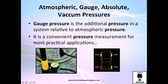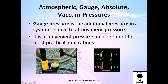Another pressure commonly used is gauge pressure — it is essentially the additional pressure in a system relative to atmospheric pressure. This is convenient for practical applications. For example, if you measure a bike tire with a gauge and then remove it, the reading goes to zero, even though atmospheric pressure is still one atmosphere. We take that baseline away and set it to zero.